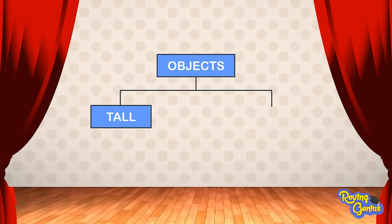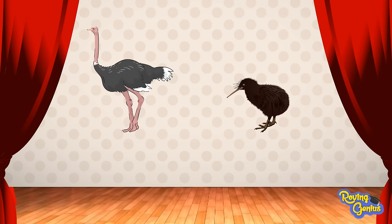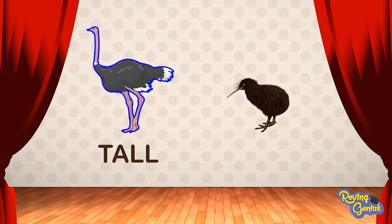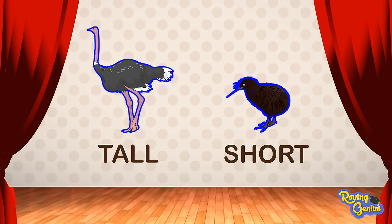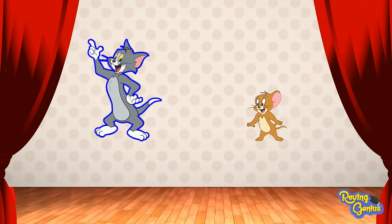The ostrich is a tall bird, while the kiwi is a short bird. Tom is tall.